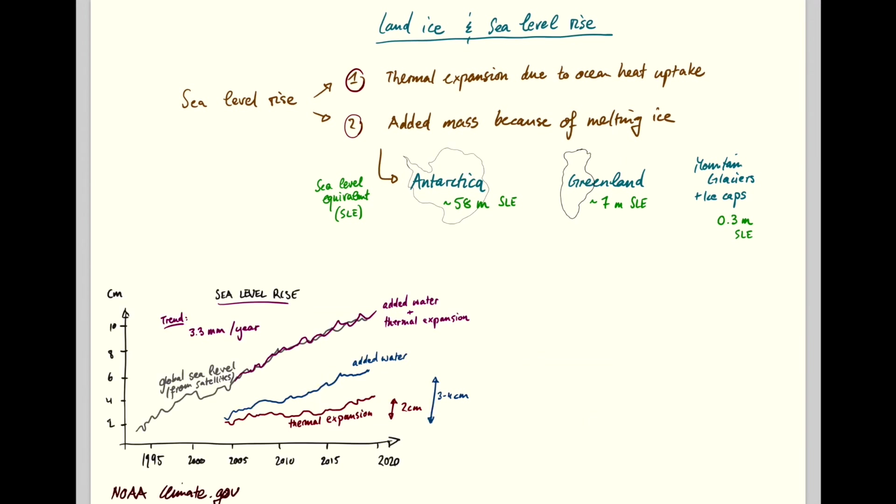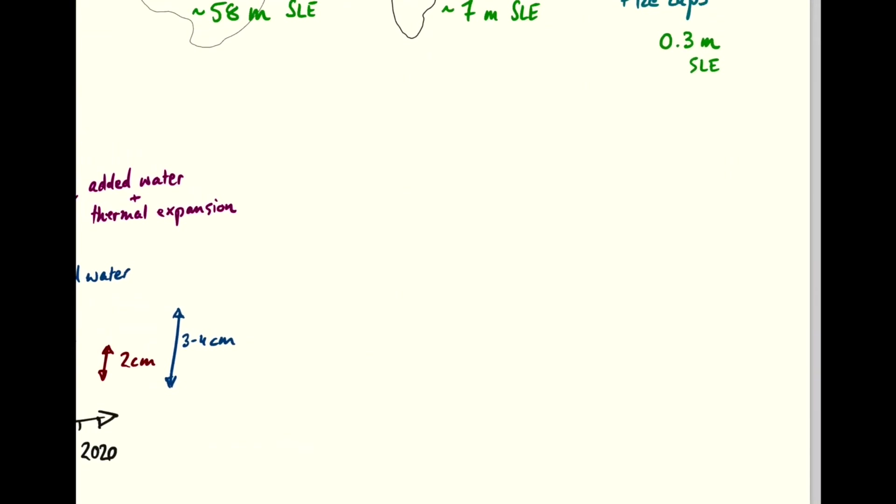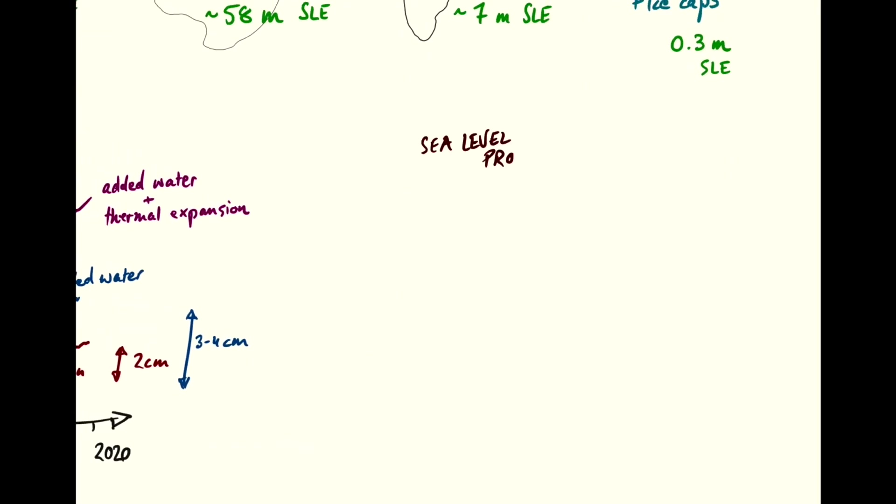So what is the sea level going to do over the next 80 years? What are the projections until 2100? So it turns out that it is very difficult to project with good certainty what the sea level is going to do over the next 80 years.